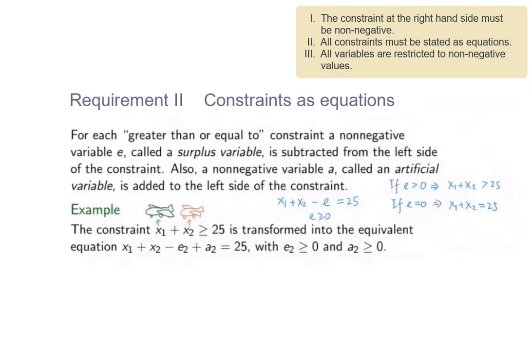In order to rewrite this constraint into an equation, we shall subtract a non-negative value from the left-hand side to make both sides equal. This is called a surplus variable and it is denoted by the letter E. If E is positive, it means X1 plus X2 is greater than 25 — the factory produces more aeroplanes than required. If E is 0, it means X1 plus X2 equals 25, meaning the factory produces exactly 25 aeroplanes. In both cases, the original constraint is satisfied.